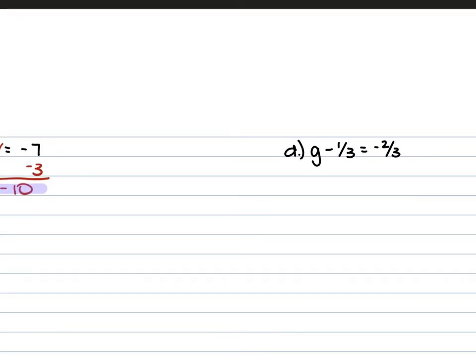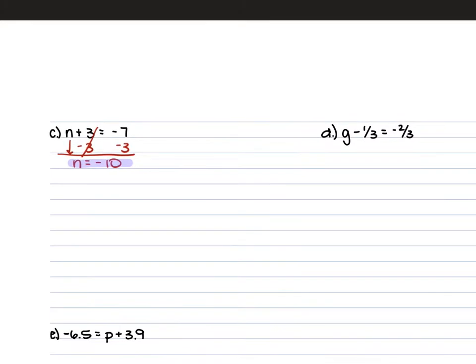For D, we have G minus 1/3 is equal to negative 2/3. To get G by itself, we add 1/3 to both sides. G comes down, and we have negative 2/3 plus 1/3. Because our denominators are the same, the denominator stays 3 and we do negative 2 plus 1, which gives us negative 1. So G is equal to negative 1/3.